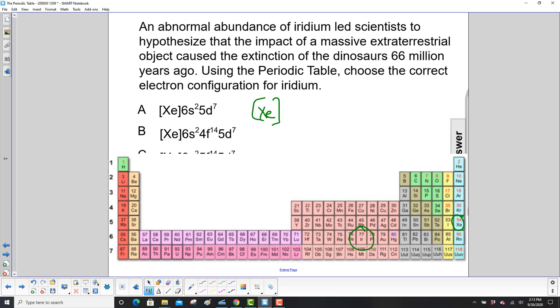Now we go to the next level, which is period 6, and we'll go all the way over to iridium. The first piece we fill is the 6s2.